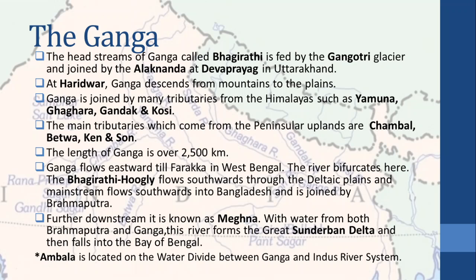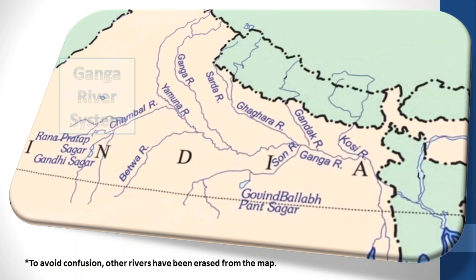Ganga flows eastward till Farakka in West Bengal, where the river bifurcates. The Bhagirathi-Hooghly flows southward through the deltaic plain, and the main stream flows southward into Bangladesh and is joined by the Brahmaputra. Ganga further downstream is known as Meghna. With water from both the Brahmaputra and Ganga, this river forms the great Sundarban delta and then falls into the Bay of Bengal.